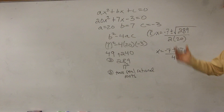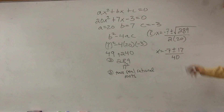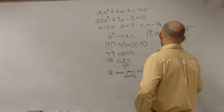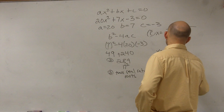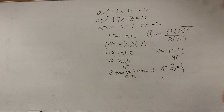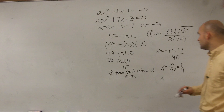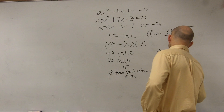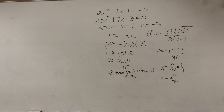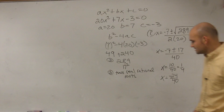Now you can do this either separately or together. I'm going to add the numerators first and then divide. So negative 7 plus 17 is 10, giving one answer of x equals 10 over 40, which equals 1 fourth. Then negative 7 minus 17 is negative 24, so x equals negative 24 over 40, which simplifies by dividing by 4 to give 6 over 10.